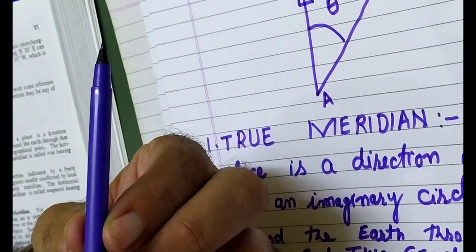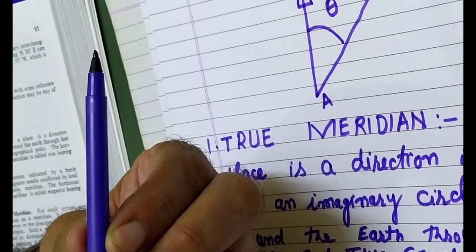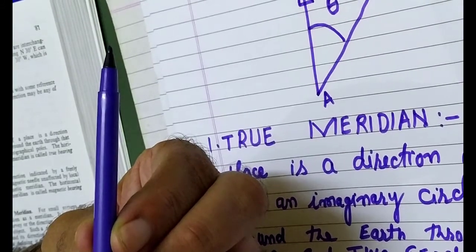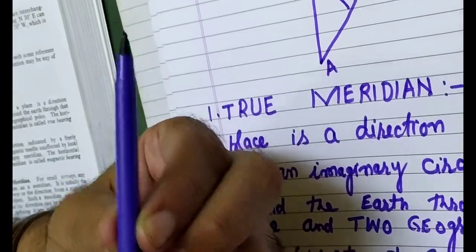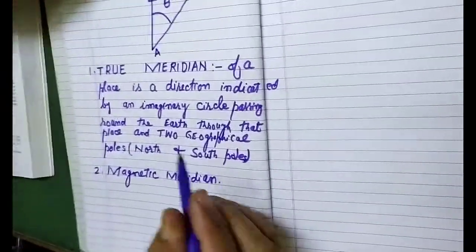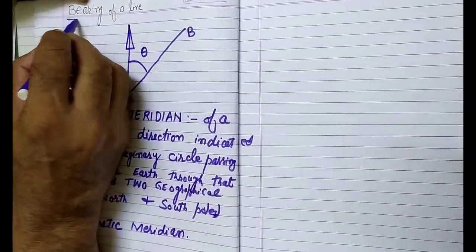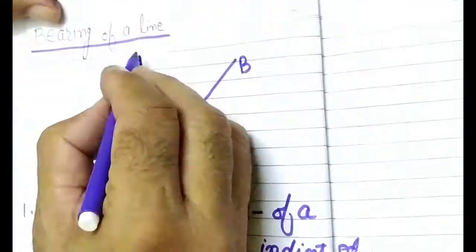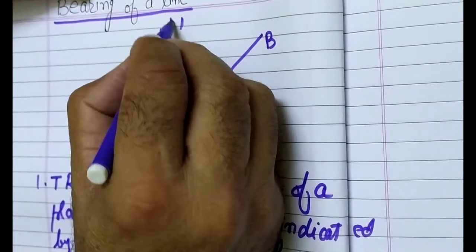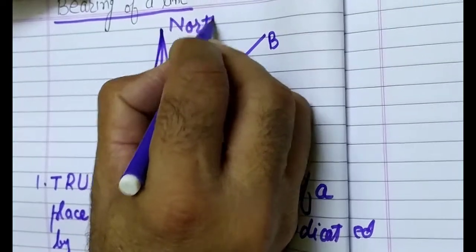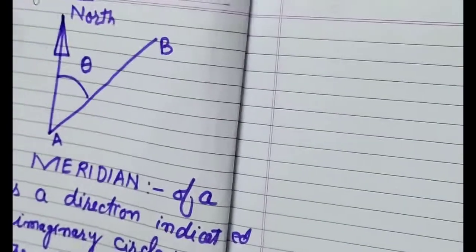When a freely suspended magnetic needle is indicated by a direction, that direction is known as the magnetic meridian. So we have two types of meridian. We are going to measure the bearing of a line. This reference axis may be north — we can say this is north — and this north may be true north or magnetic north.